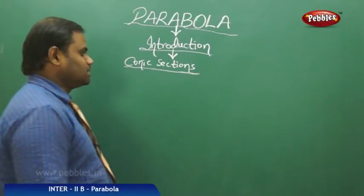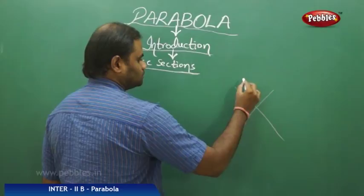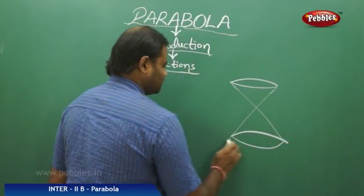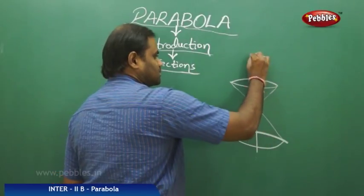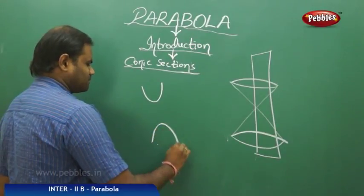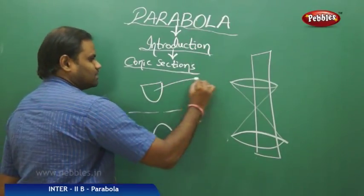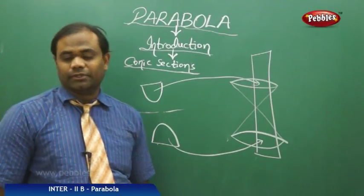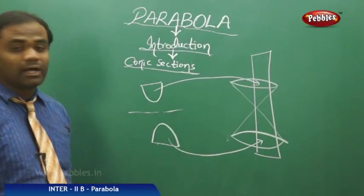Next, when I take a double cone and slice it twice — once on the top and once on the bottom — with respect to the axis, I get a hyperbola, which we will discuss in detail later in the conic sections topic.